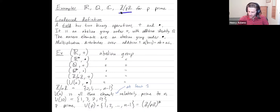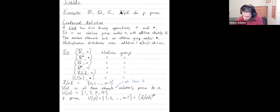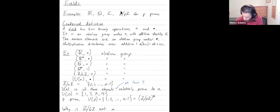It doesn't work, however, for Z mod nZ when n is not prime. So, for example, why is Z mod 6Z not a field? Let's think about this a little bit.